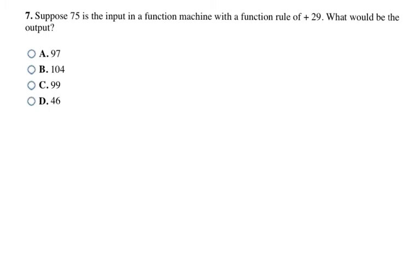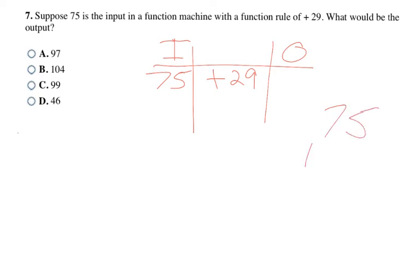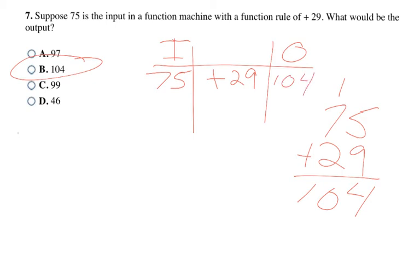This question says, suppose 75 is the input in a function machine with a function rule of plus 29. What would be the output? It's just like this past table that we saw. We're going to have our inputs, then we have the function rule of plus 29, and then we have our outputs. So if the input is 75 and you're adding 29 to it, that means to get our answer, you're just going to take 75 plus 29, which is 104. So that means B, 104, is going to be our output and final answer.